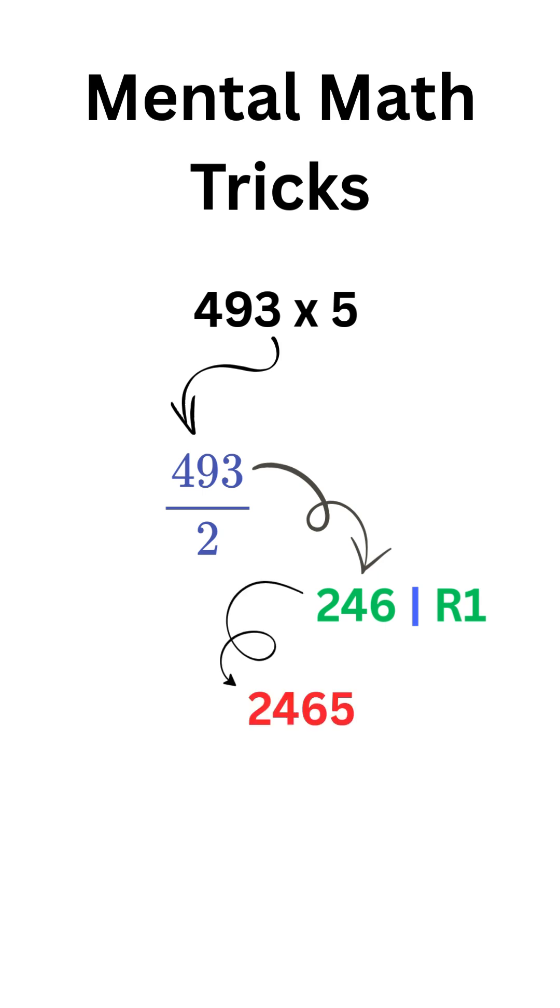add 5 at the end of 246. Wow, that is simple. 493 times 5 is 2465.